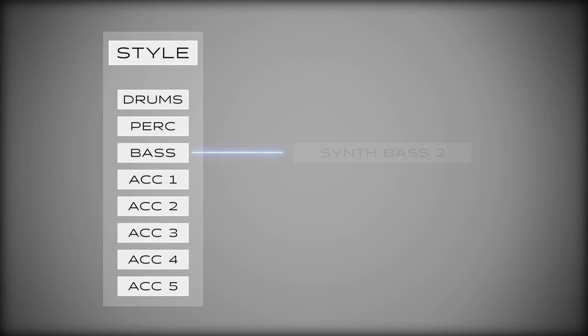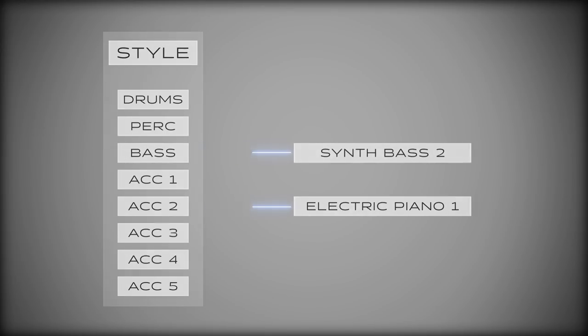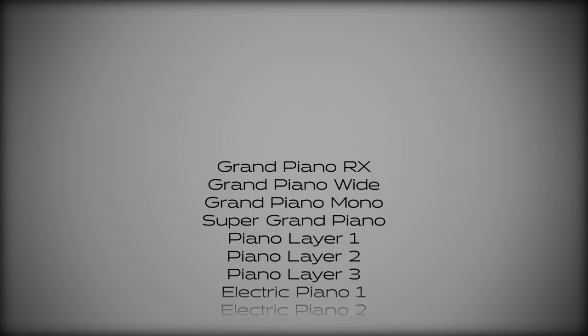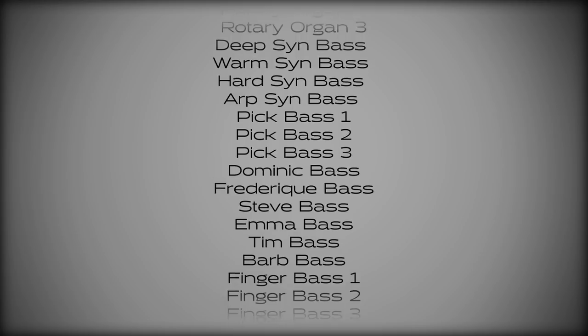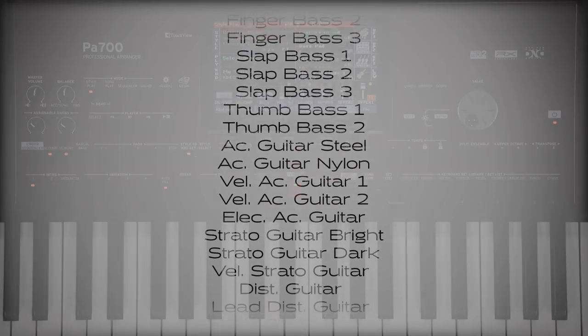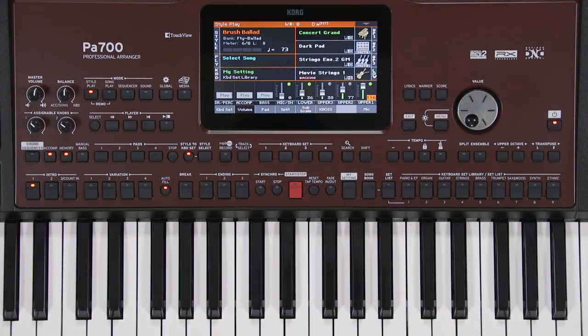In the next chapter, we'll look at styles, where you'll see that sounds are also used by the different tracks of the style accompaniment. For example, the bass track might use a synth bass sound, another track might use an electric piano sound, etc. The keyboard sets and style tracks are all accessing the same library of sounds inside your PA700. There are hundreds of completely editable sounds to choose from, plus the ability to load in your own samples — so the possibilities are endless.